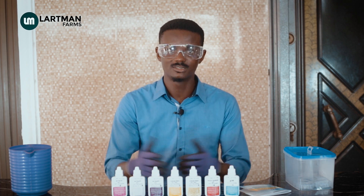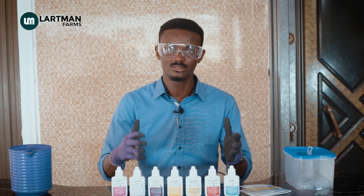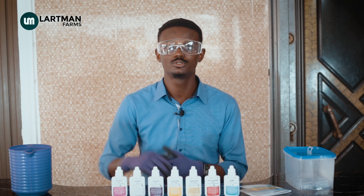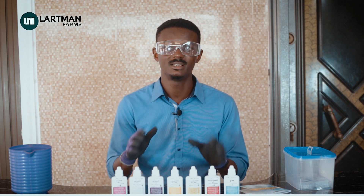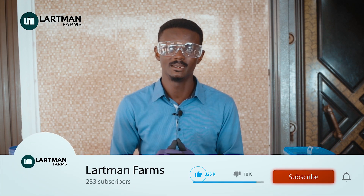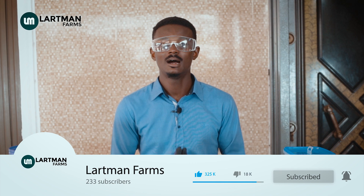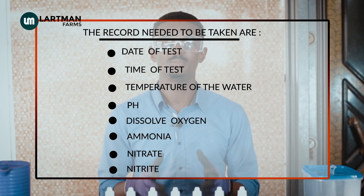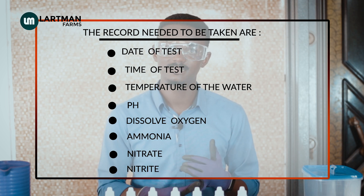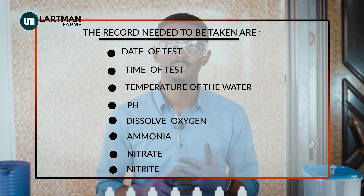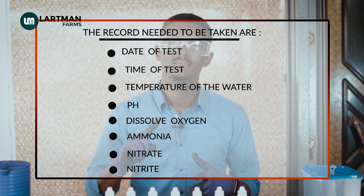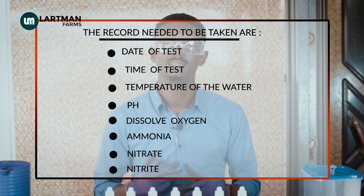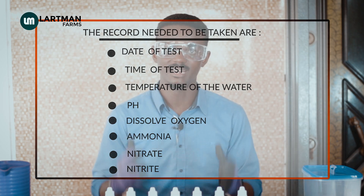You can use these test kits here to do your own test. You can also take water samples to the lab to be sure that there are no heavy metals or anything whatsoever in there. In this episode, our main focus is water in your pond. The records needed include: date of test, time of test, temperature of the water, pH, dissolved oxygen, ammonia, nitrates, and nitrites.